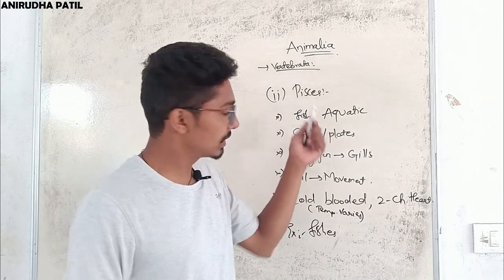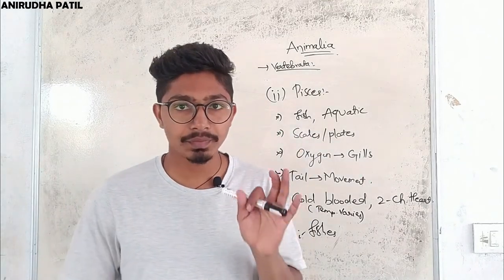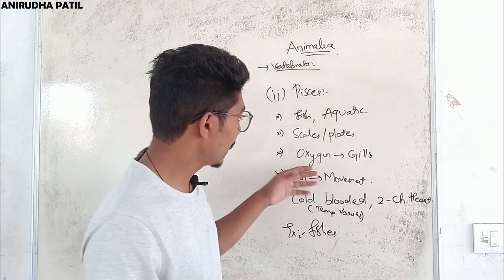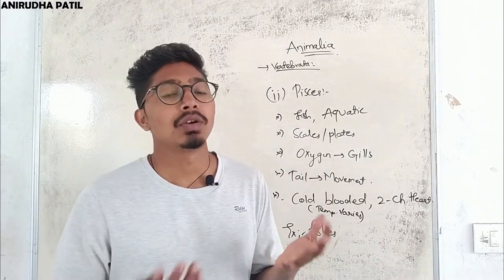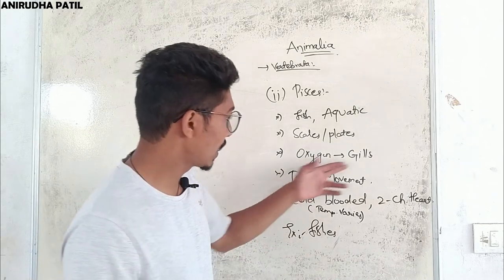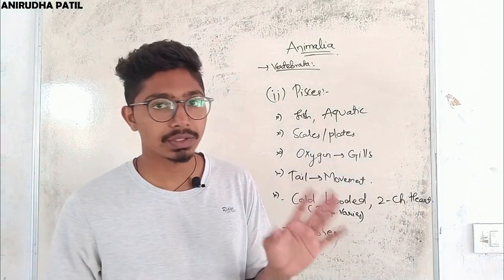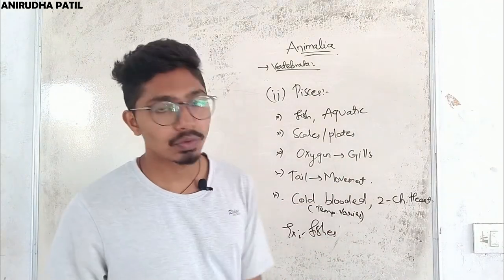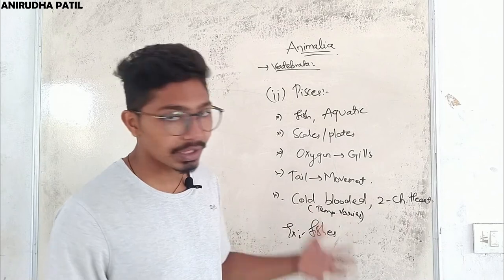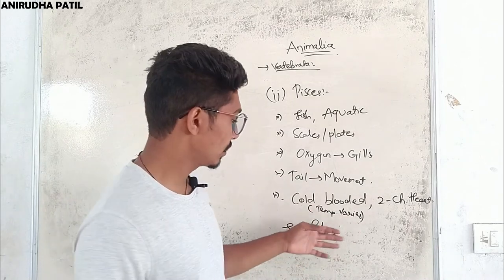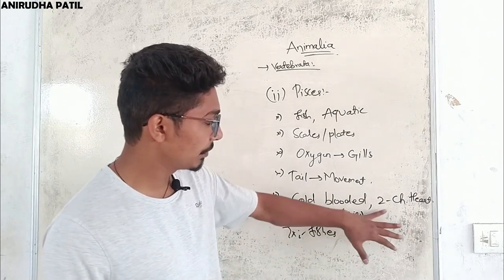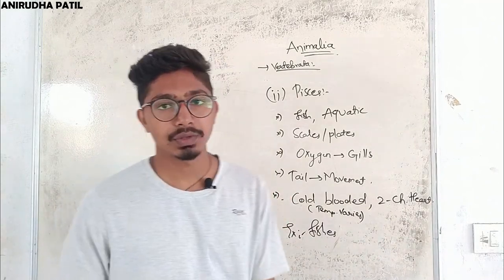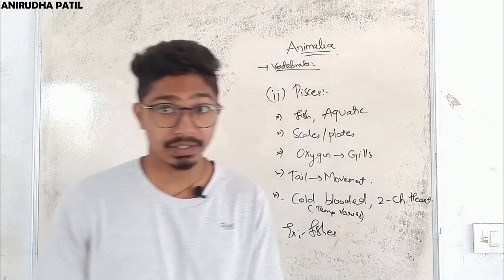The next group in Vertebrata is Pisces. Fish are mostly aquatic with scales on the body. They take in dissolved oxygen from water with the help of gills. Fish have a tail used for movement. They are cold-blooded, meaning they can vary their body temperature according to the environment. The heart is two-chambered. An example is shark.